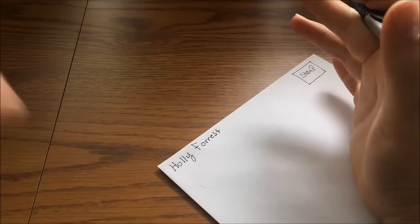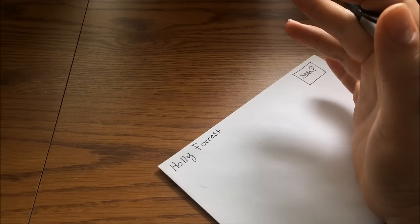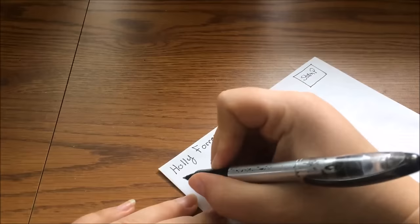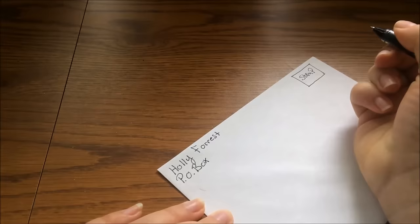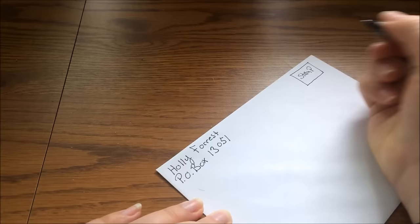After that, we're going to fill out her address. If this is like your home address, it'll be your house number first, your street, and then your city and state. So for her, it's a PO box. So it'll be PO box 13051.